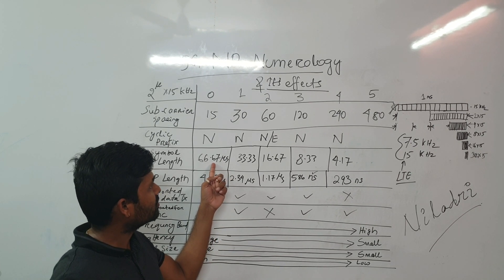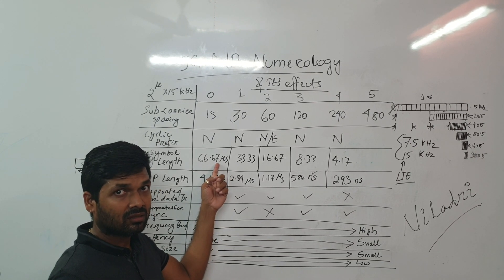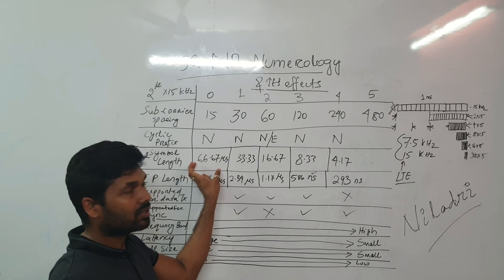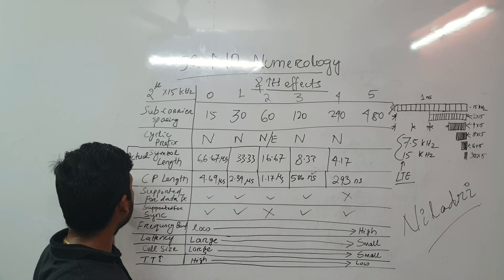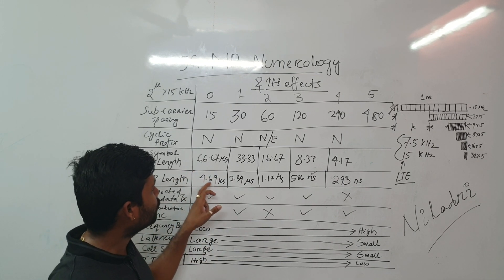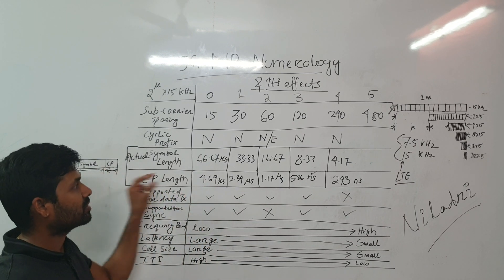So 66.67, this much of time is allocated for symbol and then 4.69 for the cyclic prefix.